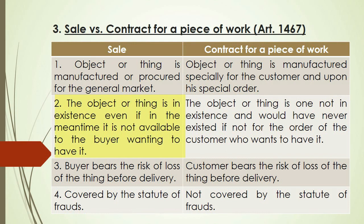Second: in sale, the object or thing is in existence — it is readily available and already being offered to the general market, even if in the meantime it is not available to the buyer wanting to buy that object. But in the case of the contract for a piece of work, the object or thing is one not in existence and would have never existed if not for the order of the customer — what we call tailor-made, to cater to the particular need of the customer.